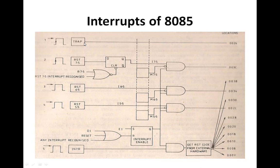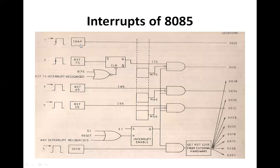In many occasions, the programmer may want to prevent the occurrence of several interrupts while the microprocessor is performing certain tasks. This can be done by masking those interrupts that are not required during certain tasks. Interrupts that can be masked are called maskable interrupts. TRAP is a non-maskable interrupt which cannot be masked. The rest — RST 7.5, RST 6.5, RST 5.5, and INTR — are all maskable interrupts.